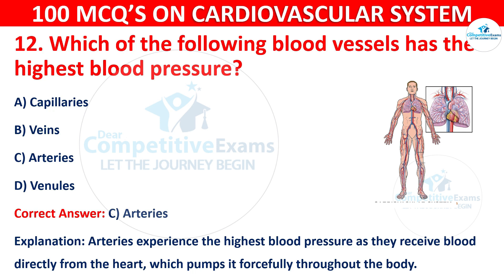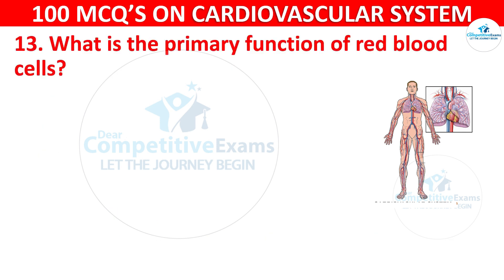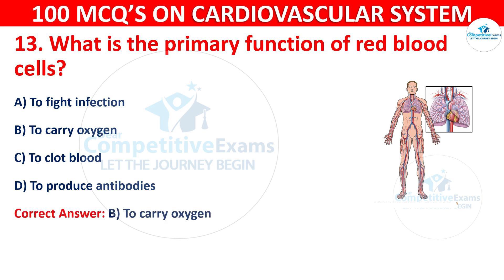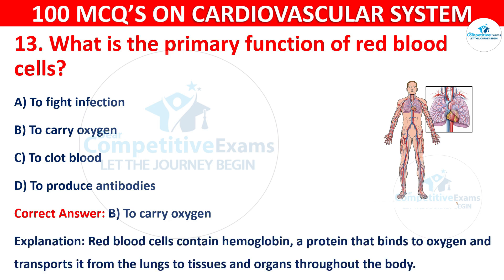Q13. What is the primary function of red blood cells? The correct answer is that red blood cells contain hemoglobin, a protein that binds to oxygen and transports it from the lungs to tissues and organs throughout the body.